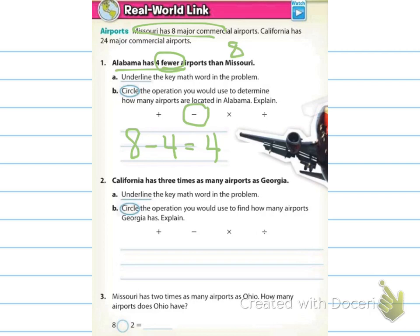Number two says California has 3 times as many airports as Georgia. So we're going to underline the key math word in the problem, which I believe is times as many. We've got California, and we know up here that California has 24. And it's saying that California has 3 times as many airports as Georgia. So they're trying to say that Georgia times 3 equals 24. Or another way of saying that is a division problem, that it's going to be 24 divided by 3, because it's 3 times as many. If it's times as many, that means I need to take my original number and divide it by 3 to equal 8. So Georgia has 8 airlines.